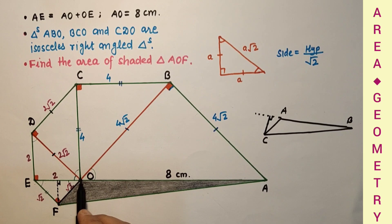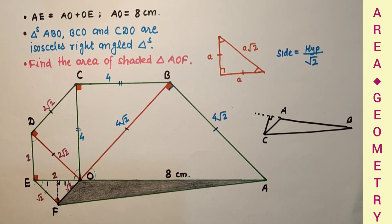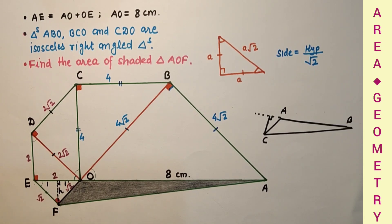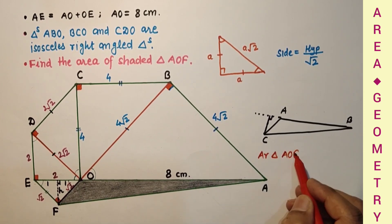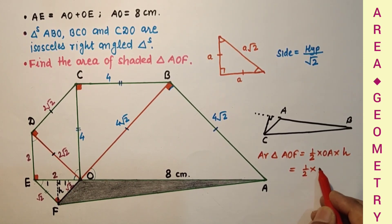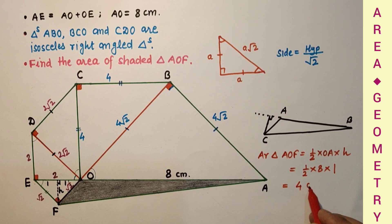OE was found to be 2, so the bisected parts are each 1. Let this height be H. Since this side is √2 and the base of the right sub-triangle is 1, by Pythagoras theorem: (√2)² = 1² + H², so 2 = 1 + H², giving H = √1 = 1. Therefore area of triangle AOF equals half times base OE times height H, which is half times 2 times 1 = 1... giving 4 cm².